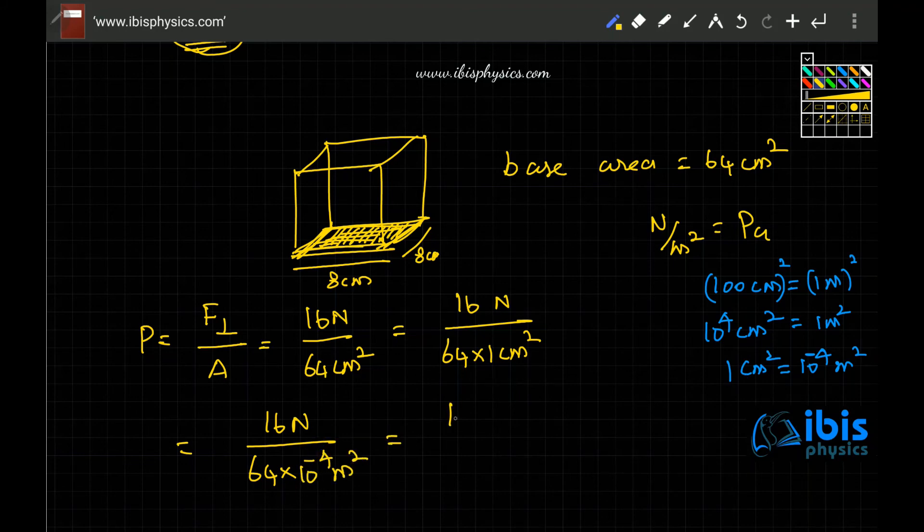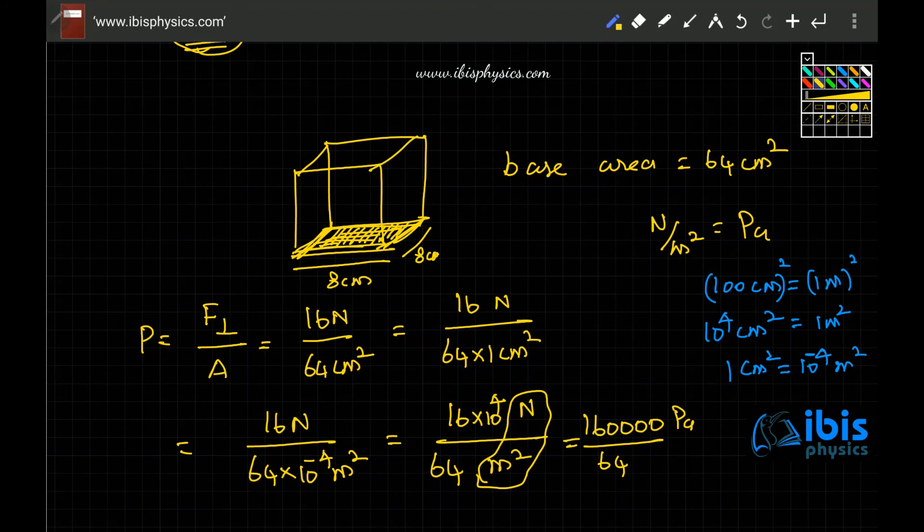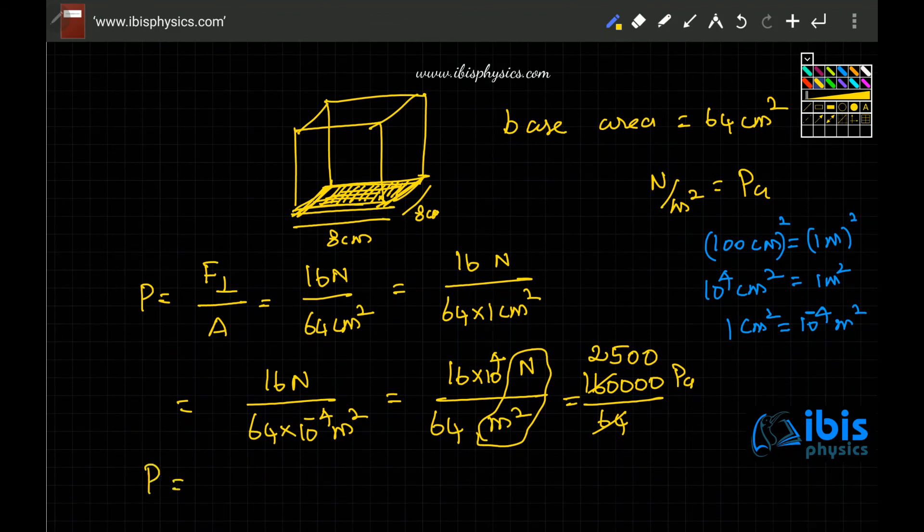So that it becomes 16 Newton by meter square. So 16 Newton by meter square is Pascal. So 16 into 10 power 4 means 160000 Pascal by 64. So 64s are 128, then remaining it is 128. So 5 into 64 is 320, so 2500 pascals. You can use calculator to find out. So it is 2500 pascals.